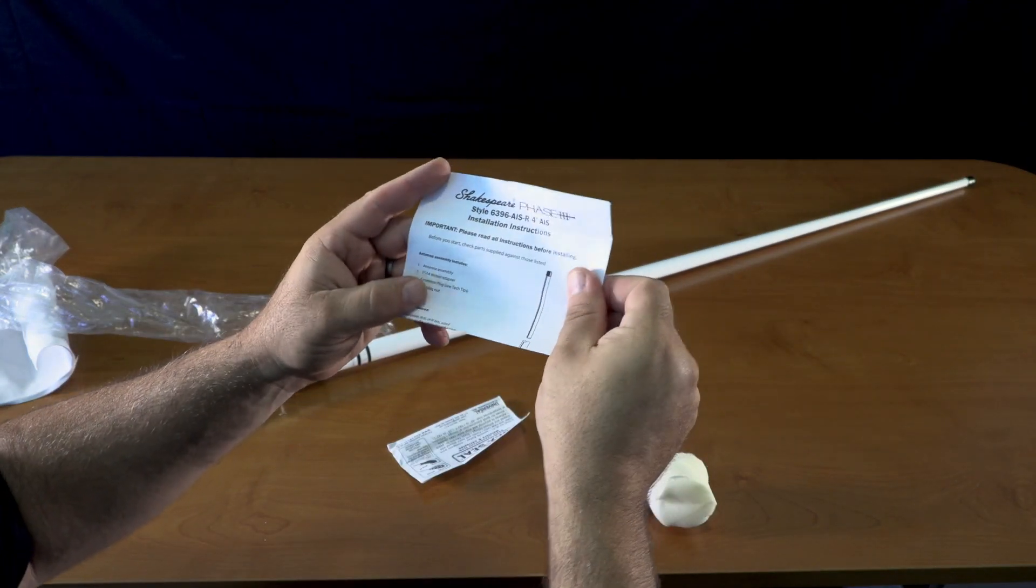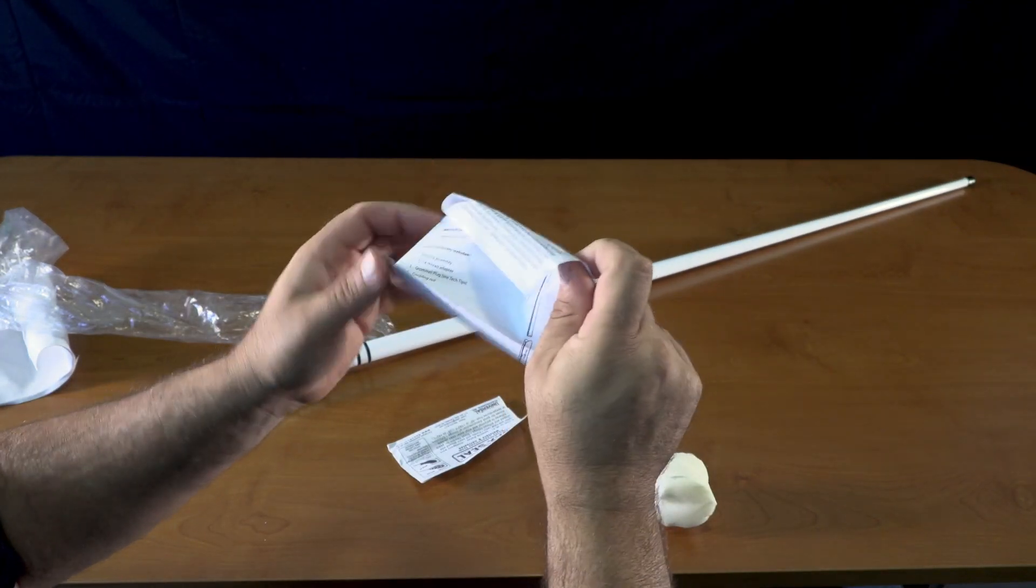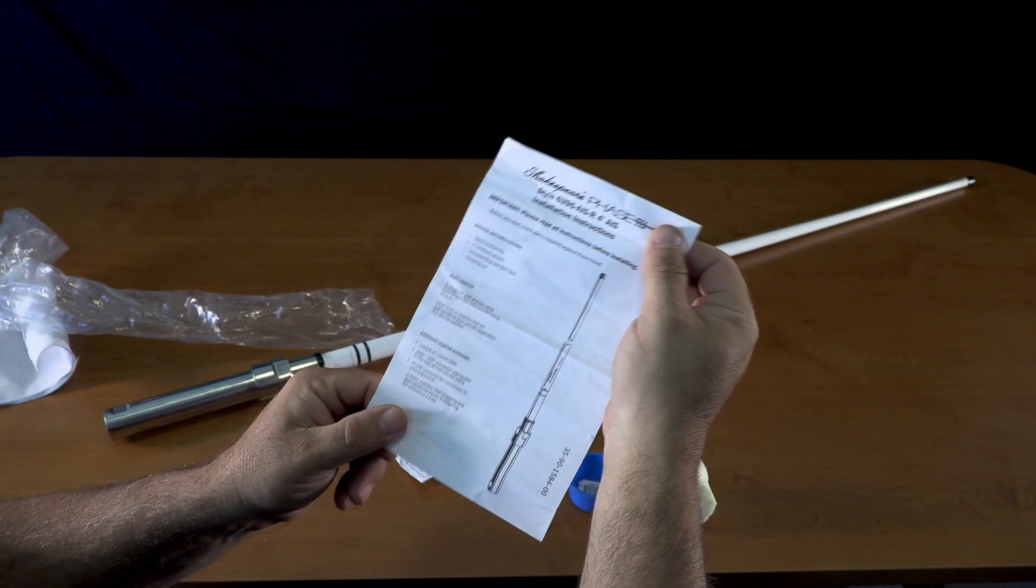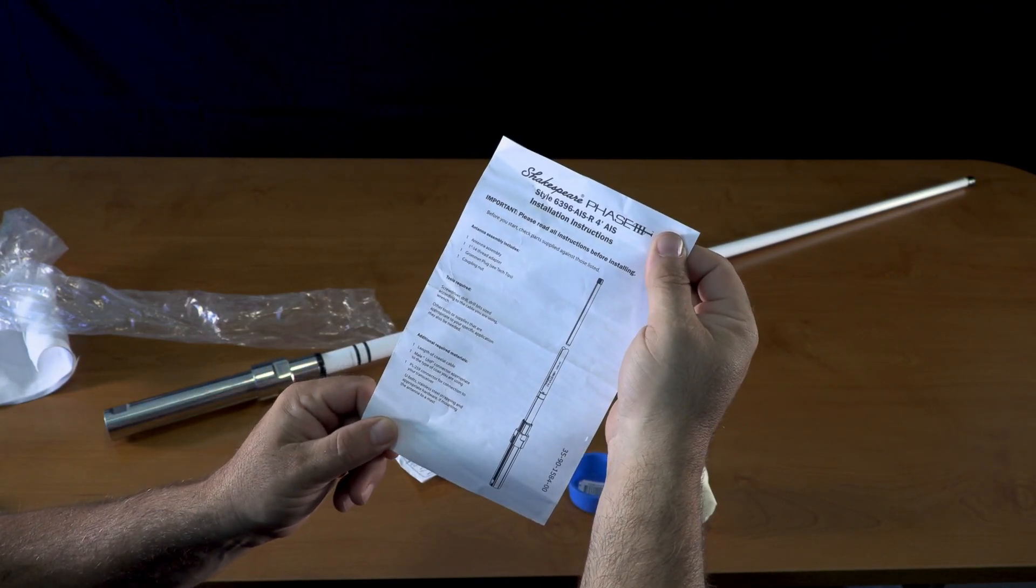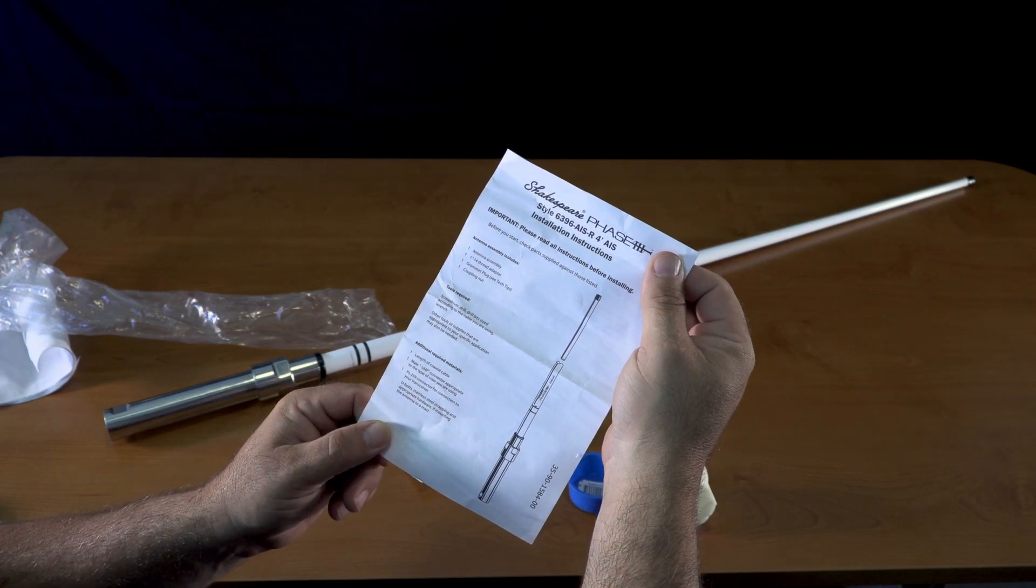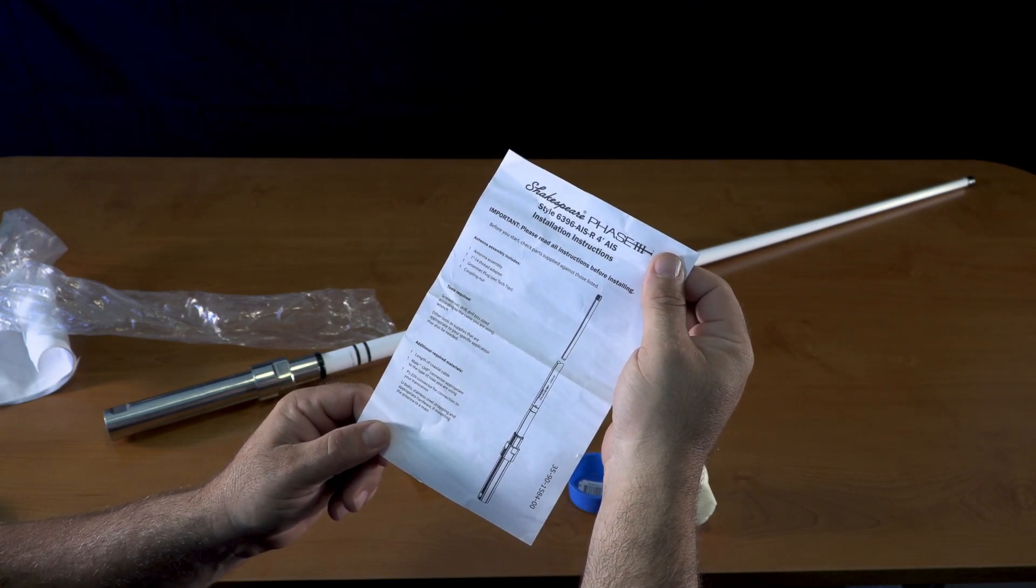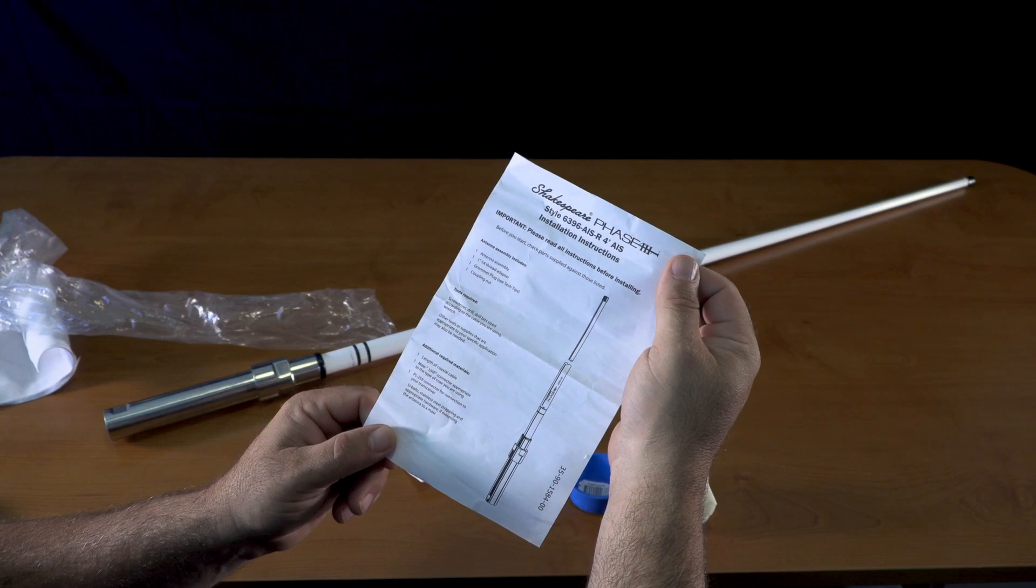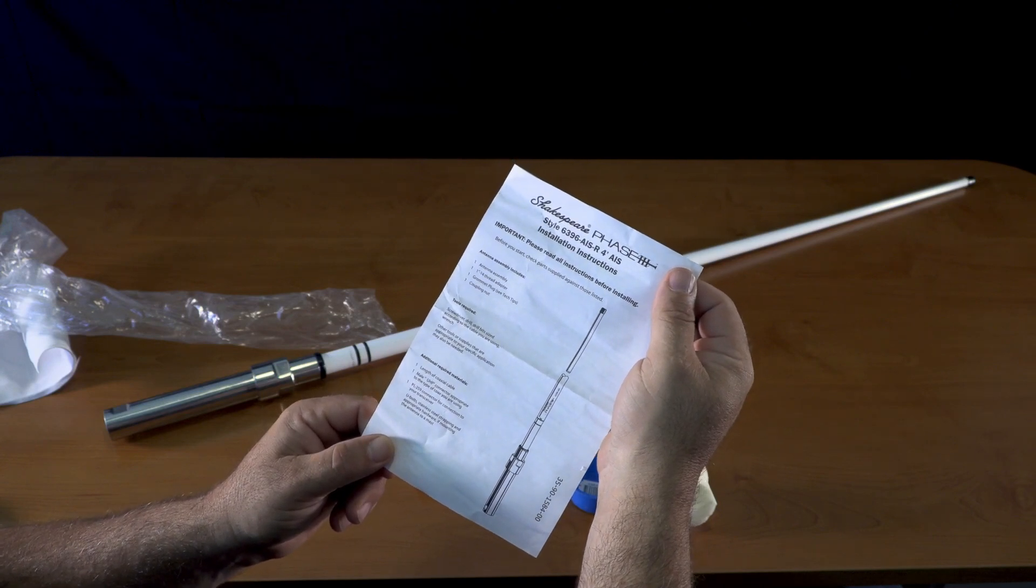The installation instructions show that the antenna assembly includes the antenna, a 1 by 14 thread adapter, a grommet plug, and a coupling nut. Tools required: screwdriver, drill, drill bits according to size, and wrench. Additional materials needed include a length of coaxial cable.